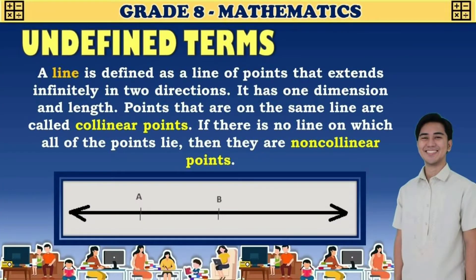The next undefined term is a line. A line is defined as a line of points that extends infinitely in two directions. It has one dimension: length. Points that are on the same line are called collinear points. If there is no line on which all of the points lie, then they are non-collinear points.